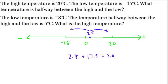So now if we go the other way from 2.5 to negative 15, how far do we hop? Well, it's also 17.5 because 2.5 minus 17.5 also equals negative 15, right?